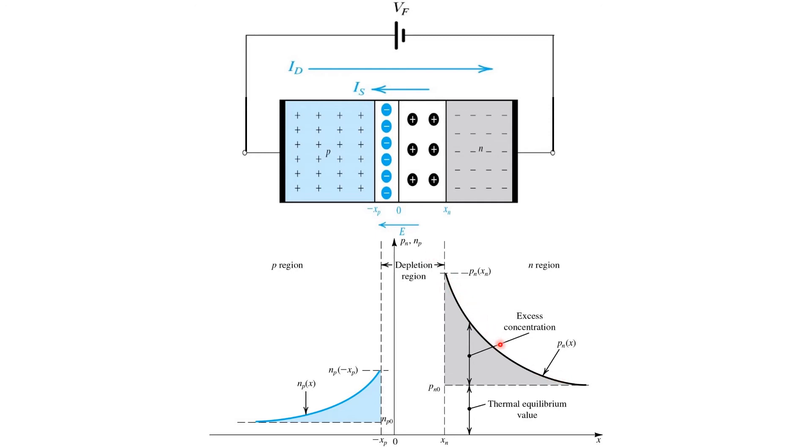Now, as they go, they immediately start recombining with the majority carriers in the N type region, the free electrons, and that's why their concentration decreases. And this gradient in minority charge carrier concentration is what gives rise to the continuous flow of current from left to right in this case.